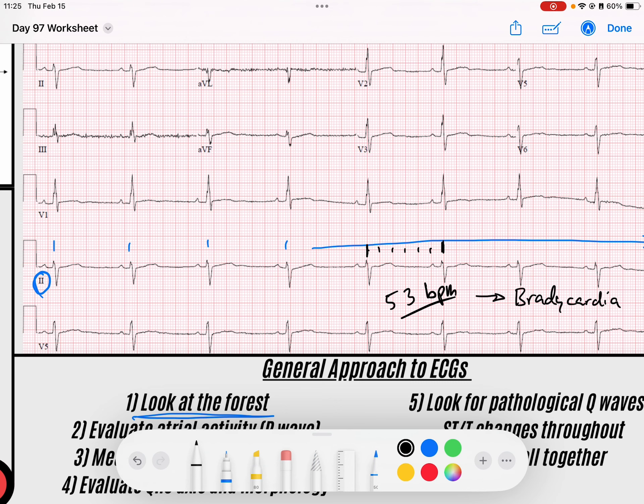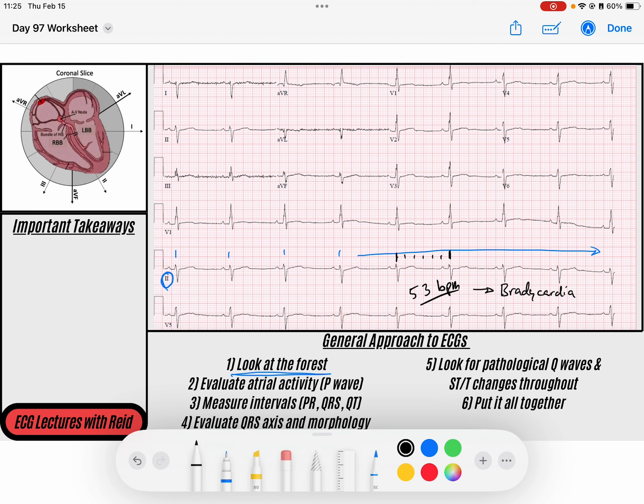We know our differential for a narrow complex bradycardia is it could be a junctional rhythm, it could be a sinus bradycardia, it could be ectopic atrial bradycardia. And I notice here as I just looked through that we have P waves before my QRSs. Let's evaluate those P waves, let's evaluate how the atria are depolarizing.